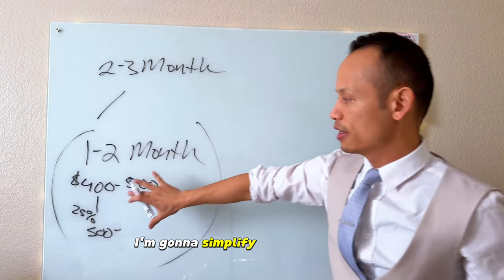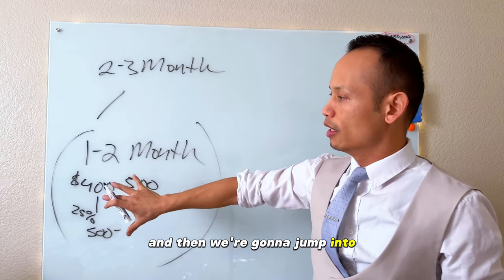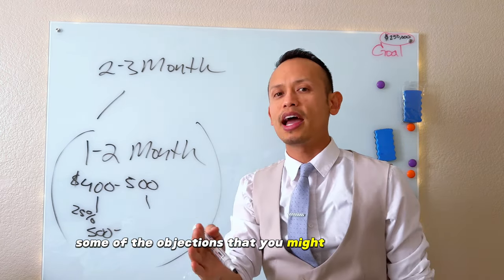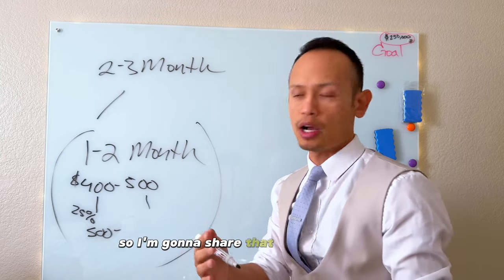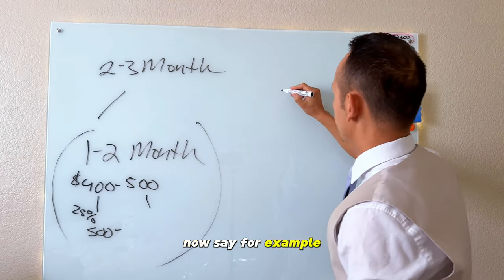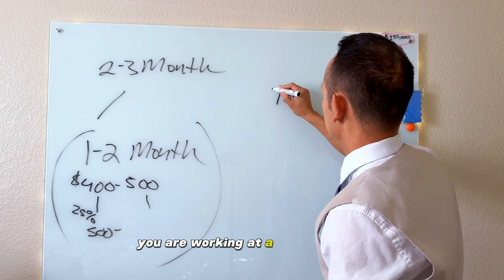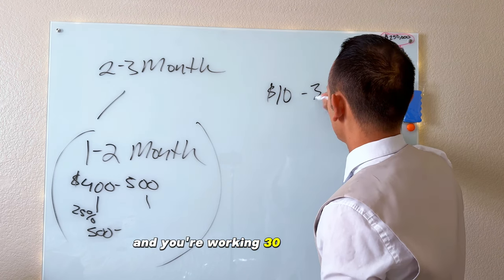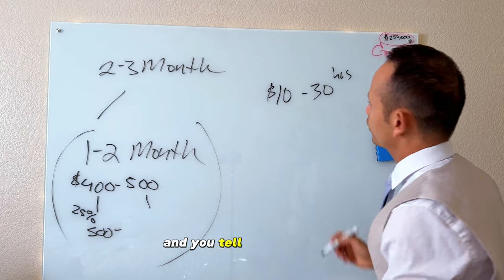How does this look like when it gets simplified? I'm going to simplify this here for you, and then we're going to jump into some of the objections that you might have that I had. Now say, for example, you are working at a $10 rate and you're working 30 hours a week, and you tell your boss, 'Boss, I have a kid on the way, inflation, I need to make more money.'